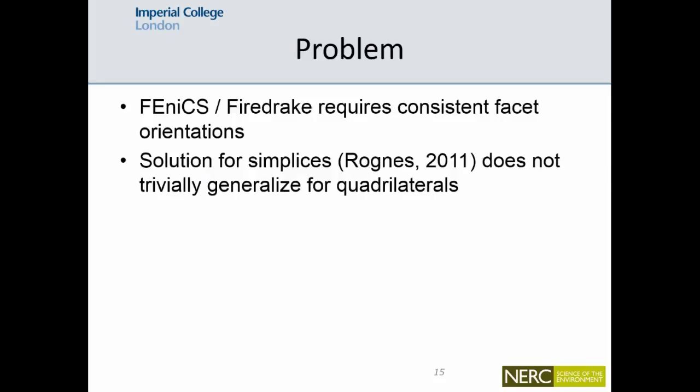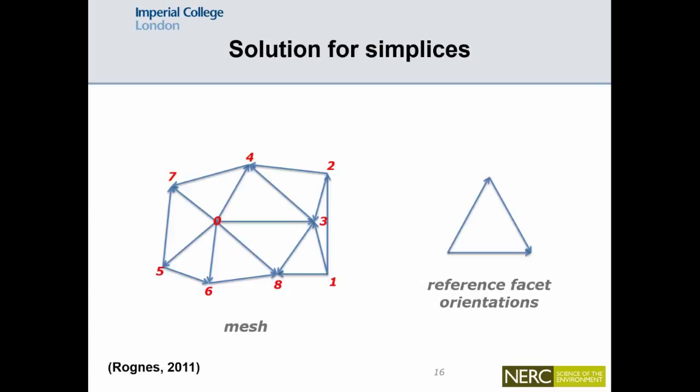So Phoenix and FireDrake require consistent facet orientations. And this would be quite hard work to change. And so if you read Murray's paper, in which the current solution in Phoenix and FireDrake is described for simplices, then you will see that this solution for simplices is an elegant algorithm, but unfortunately it does not generalize for quadrilaterals. So the idea was for simplices, that each vertex has got a globally unique number, and then the local numbering is made to match up the global numbering. So basically, the orientations are made in a way that each edge is directed from the lower to the higher potential.